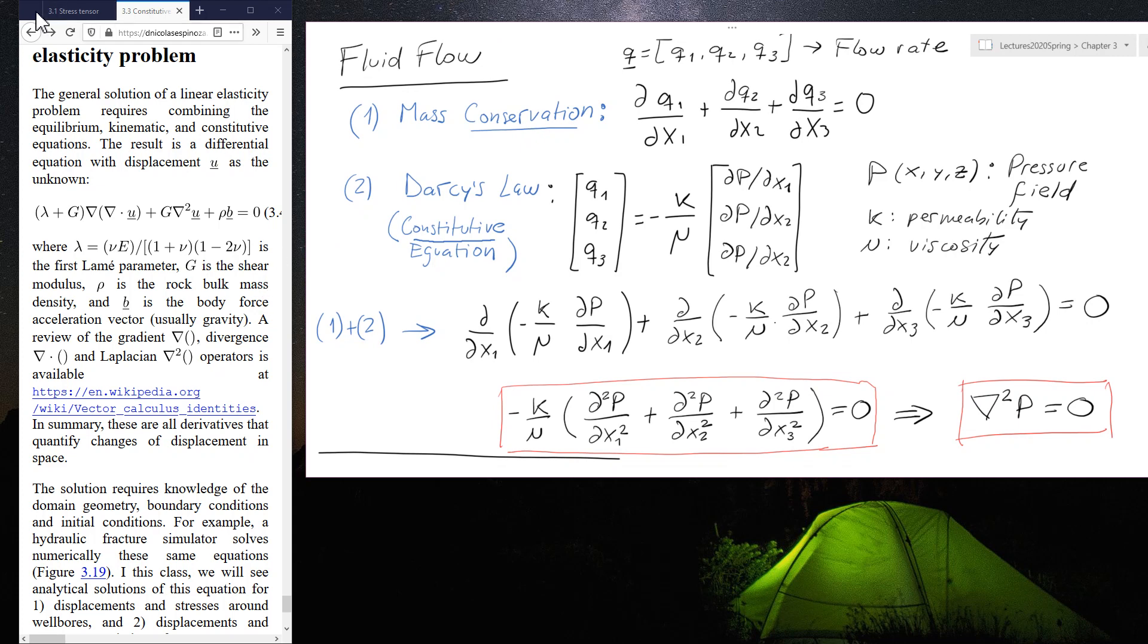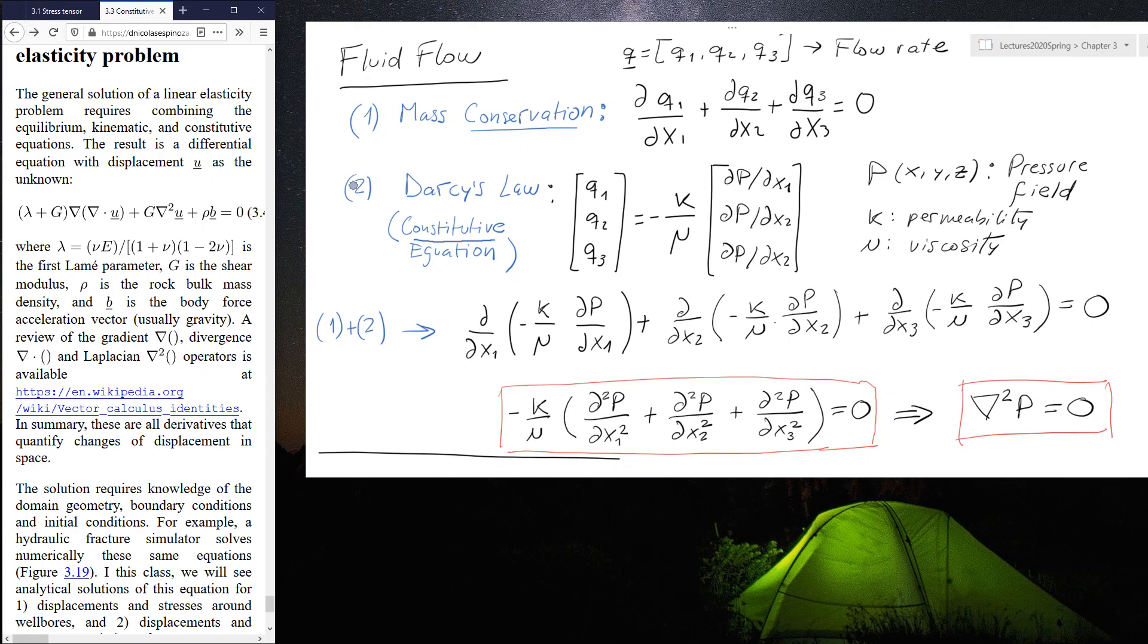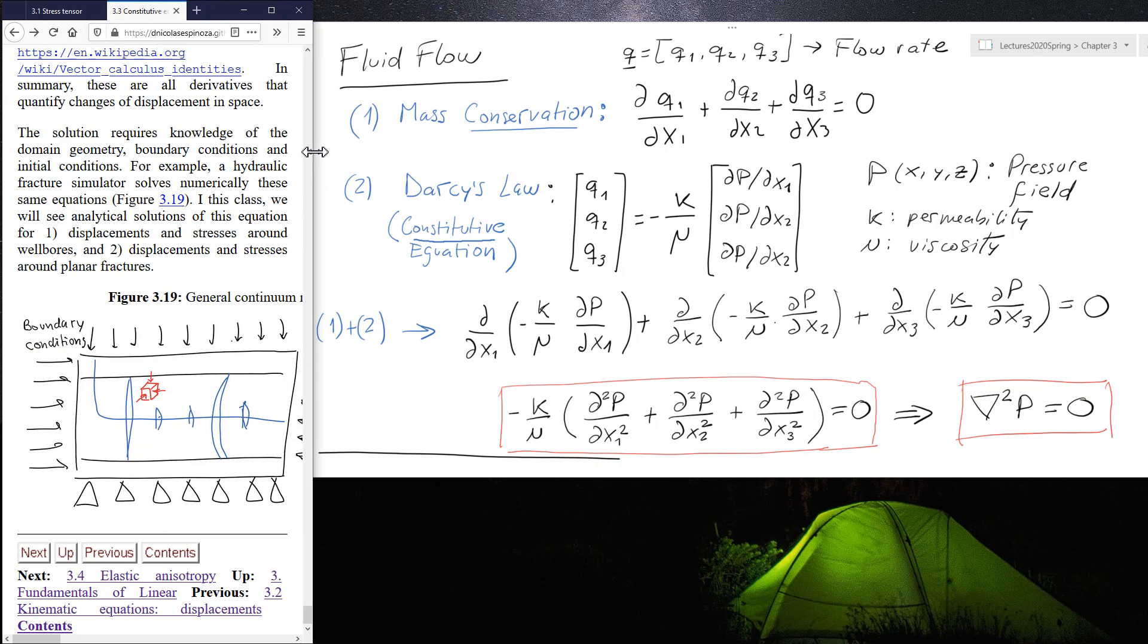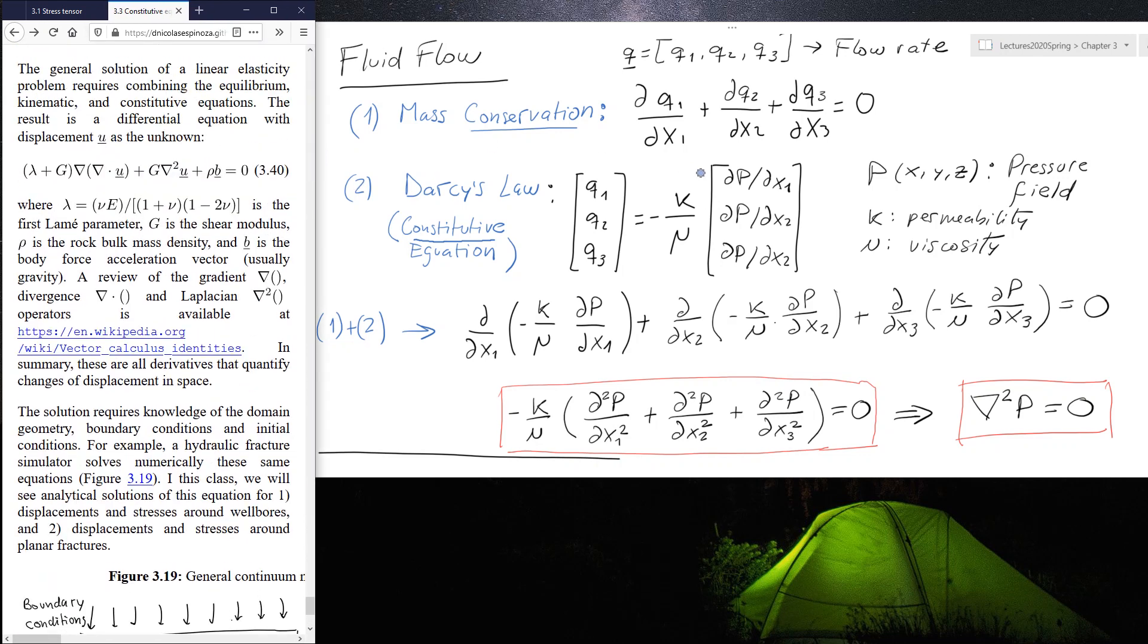And the comparison I'm going to do is a comparison with fluid flow. Probably if you are a petroleum engineering student, this is an equation that you know a lot better. In fluid flow, what we do in order to solve a fluid flow problem under steady state conditions, is that we use the mass conservation equation, which tells us that the summation of the derivatives of the flow rates in a three-dimensional space, with respect to the derivatives in space, has to be equal to zero.